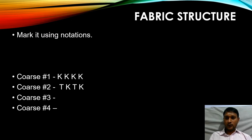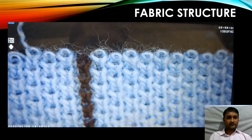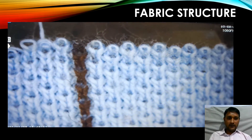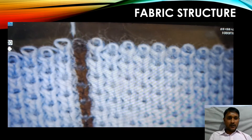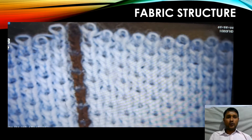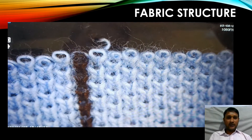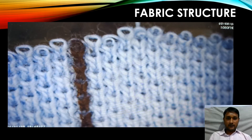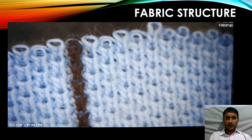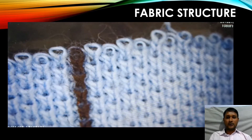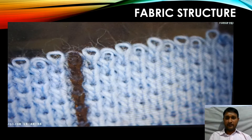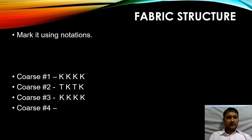Now let's move on to course number 3. In course number 3, we can find the complete loop is getting unravelled from the previously knitted loop — every needle is a knitted loop. So we can notify course number 3 as knit, knit, knit, knit.